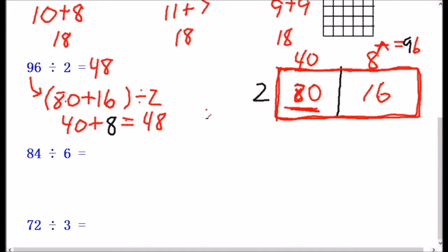Because 48 times 2, I'm going to use partial product for this one. So 8 times 2 is 16. And 40, remember this is 40, times 2 is 80, which gives us 96. And that's just a way to check and make sure we've done our work correctly.